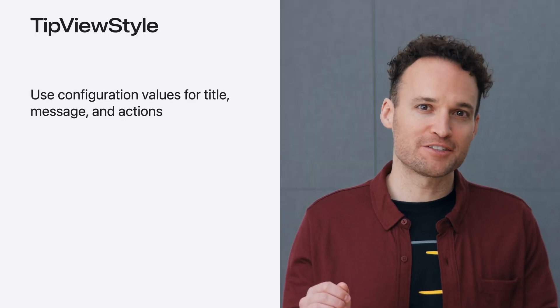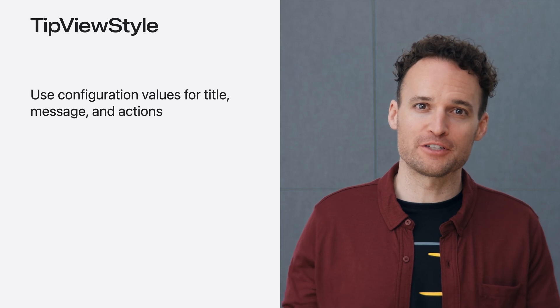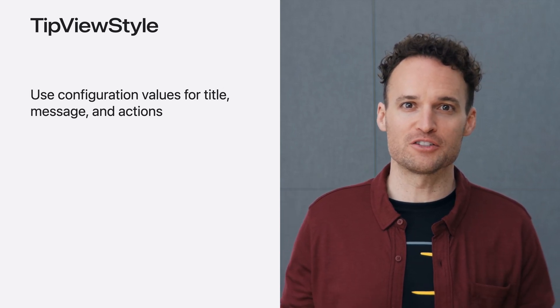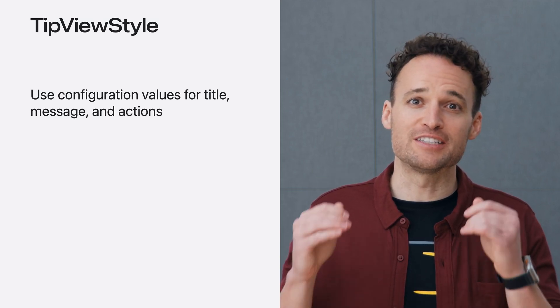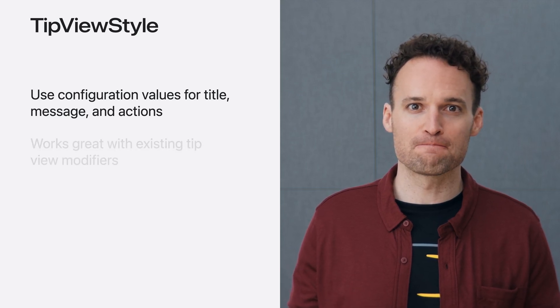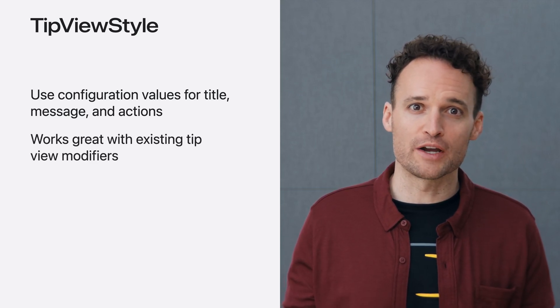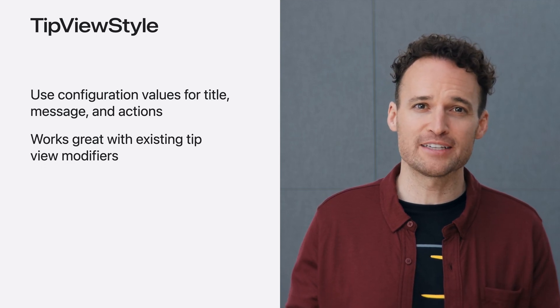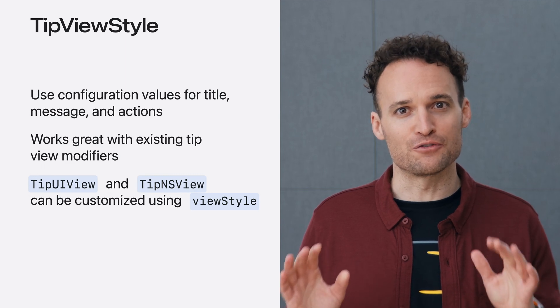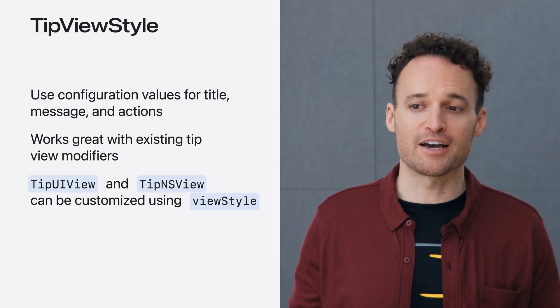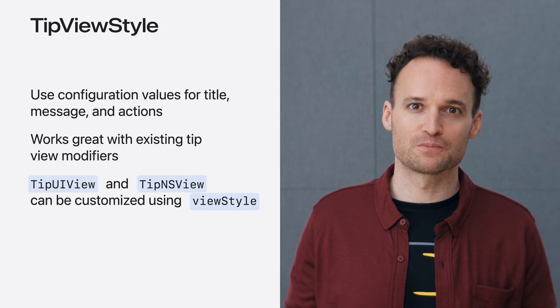When creating a custom TipViewStyle, it's important to favor the properties from its configuration argument over the tip's instance values whenever possible. This allows the closures and modifiers applied to your TipViews to still be evaluated when using a custom style. Custom TipViewStyles also work great alongside other TipView modifiers like TipCornerRadius and TipBackground. And for apps that use UIKit or AppKit, there is a ViewStyle property that can be set to change the style of TipUI and TipNSViews. By creating a TipViewStyle, you can easily show tips with custom appearances and behaviors while still allowing TipKit's rules engine to handle their display and dismissal.